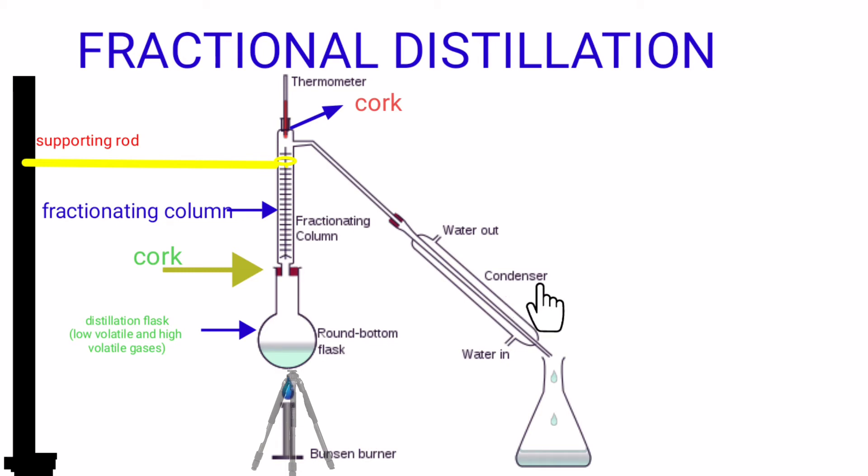A condenser is attached to the fractionating column. The function of the condenser is to cool the gases and convert them into liquid by passing water around it. The condensed liquid from the condenser is collected in a beaker.